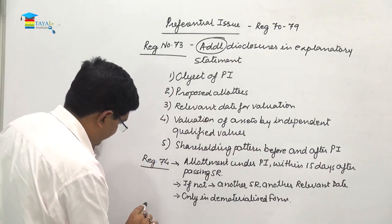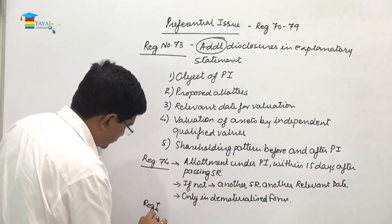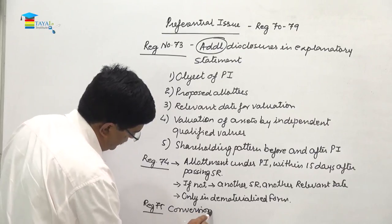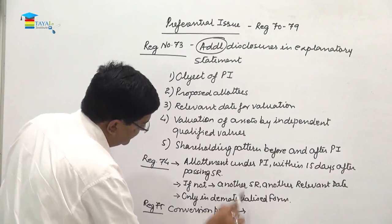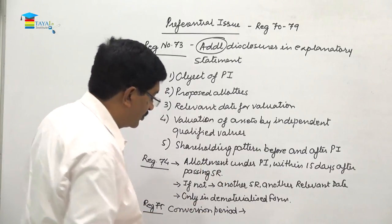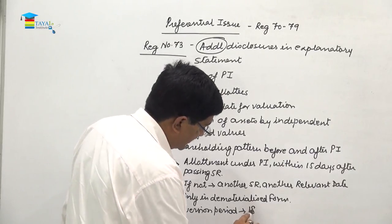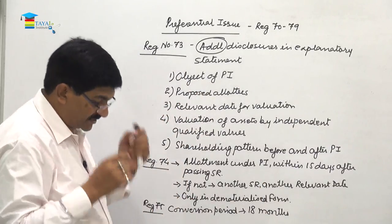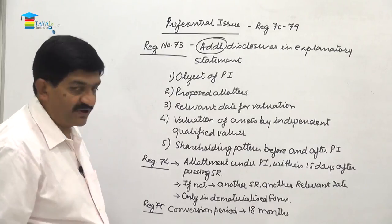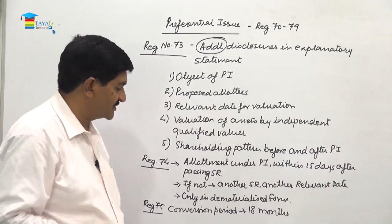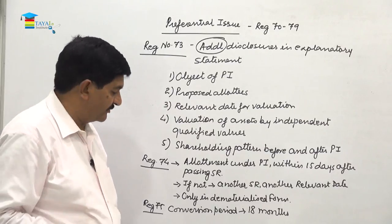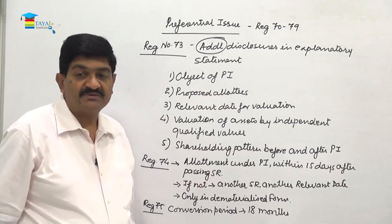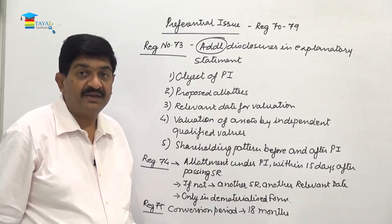Regulation number 75 talks about the conversion period. If convertible securities are being issued under the preferential offer, the maximum time within which conversion has to be done is 18 months.